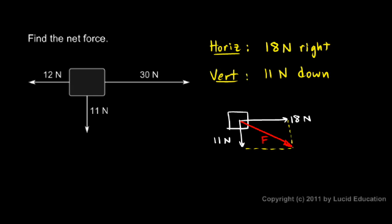So F squared is going to equal 11 squared plus 18 squared. And that's 121 plus 324, and that comes out to 445.